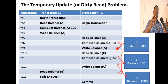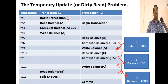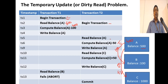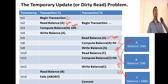We begin transaction T1, read balance of A from the buffer — that is 500. T1 computes A minus 100, which is 400, and writes balance of A as 400 to the buffer. Now T2 kicks in and starts reading balance of A. What balance will T2 read? 400 from the buffer, because T1 has already written it there.